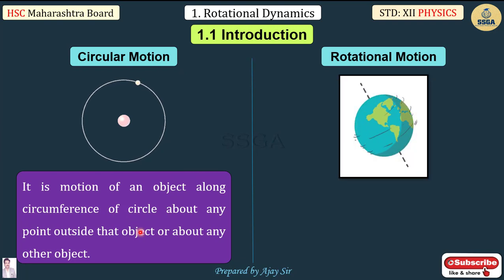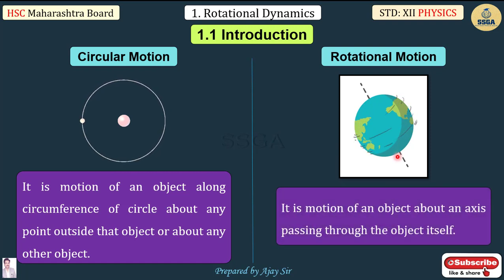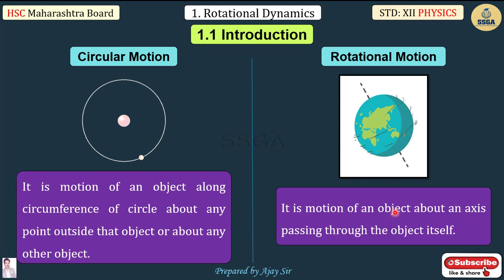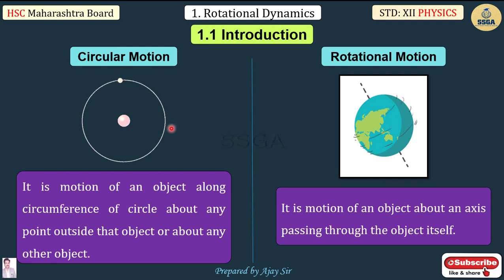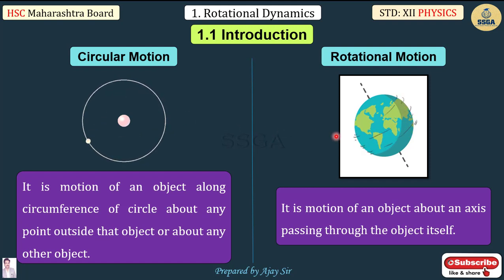Rotational motion, for example, is the rotation of the Earth along its axis. It is the motion of an object about an axis passing through the object itself. In circular motion, the point is outside the object; in rotational motion, the axis passes through the object itself.